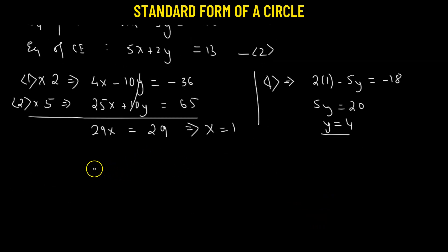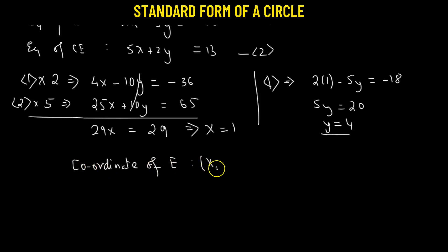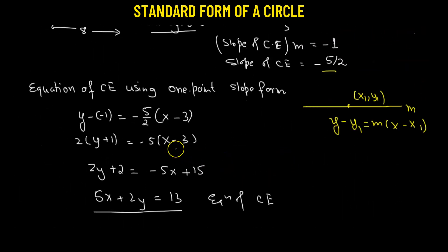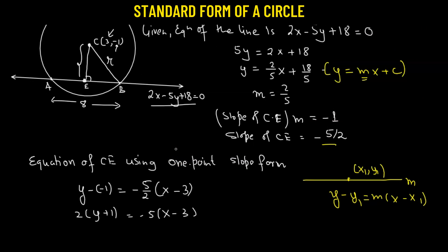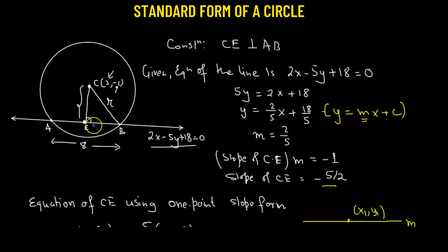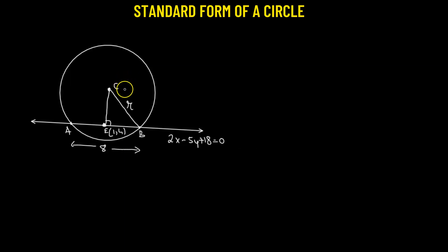The values x equals 1 and y equals 4 give us the coordinate of point E, which is (1, 4). Now we use this along with the center C at (3, -1) to find the distance CE using the distance formula.